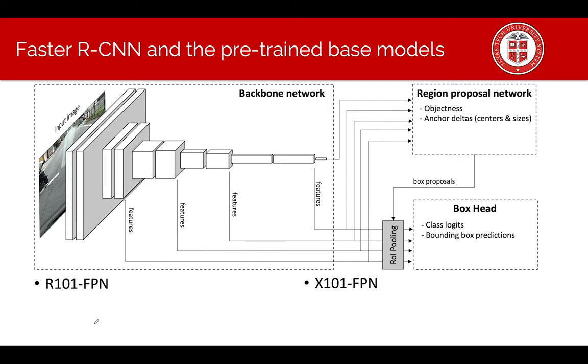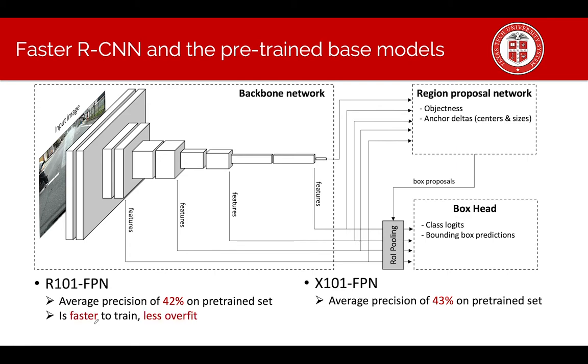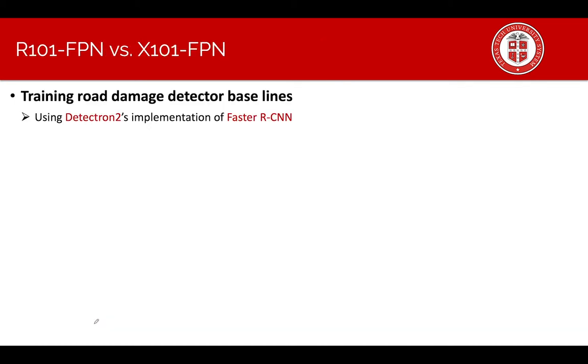When using faster R-CNN we need to provide the backbone network. We explored several backbone networks, then finally selected the R101 and X101 feature pyramid network. The reason is they have better accuracy on average precision with 42% and 43% respectively. The X101 has better accuracy however we still explore R101 because it's faster and less overfit.